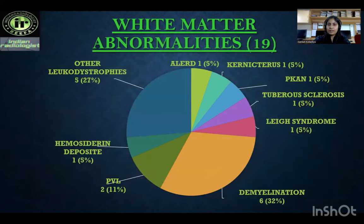White matter abnormalities: out of 19 cases, one case is of ELAD, one is Krabbe disease, one is PKAN, one is tuberous sclerosis, one is restless leg syndrome, six cases are demyelination, two are periventricular leukomalacia, one is hemosiderin deposits, and five are other leukodystrophies.